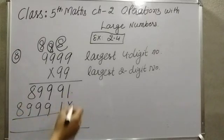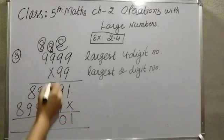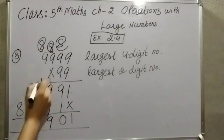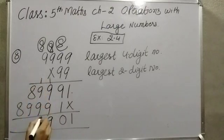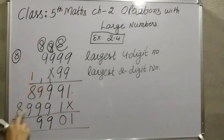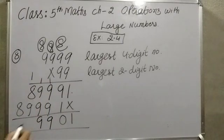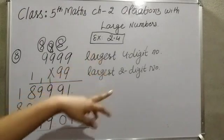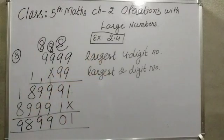Now adding the partial products: 1 comes, then 0 with carry; 9 × 9 = 18 plus 1 = 19, carry; again 9 × 9 = 18 plus 1 = 19, carry; then 9 plus 9 = 18, so 8 here with 1 carry; and 8 plus 1 = 9. So the product of the largest 4-digit number (9999) and the largest 2-digit number (99) gives us this final answer.